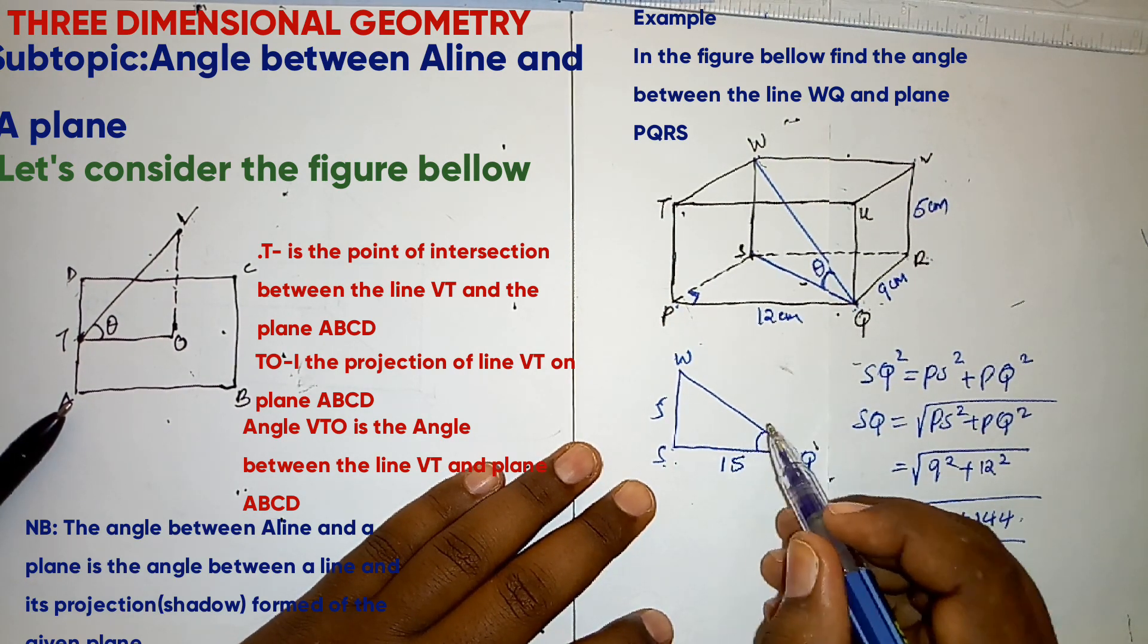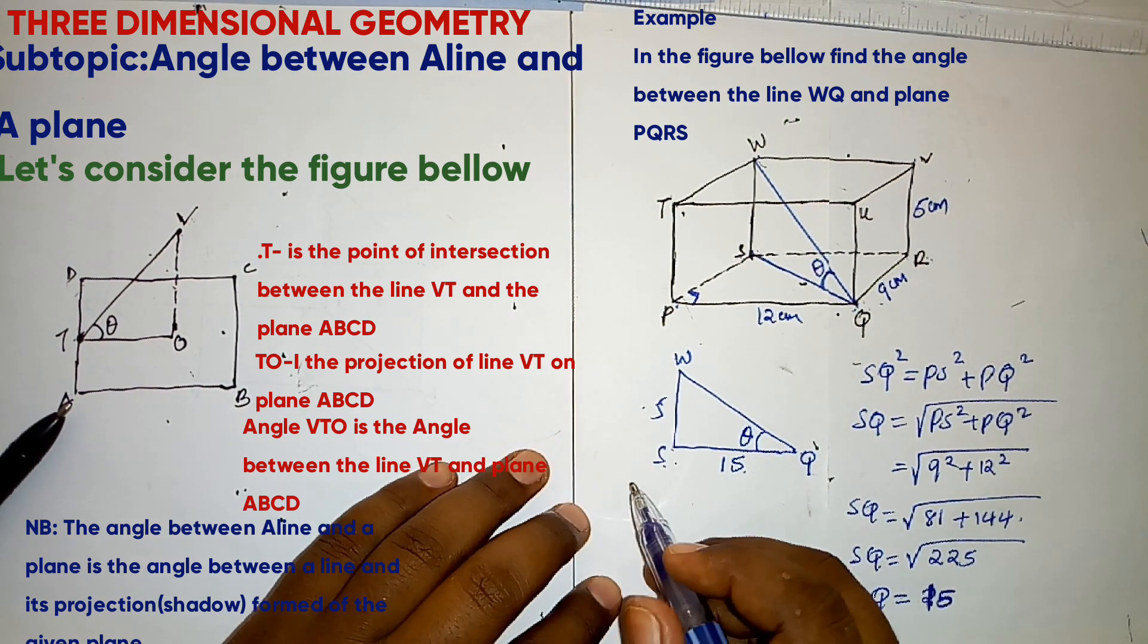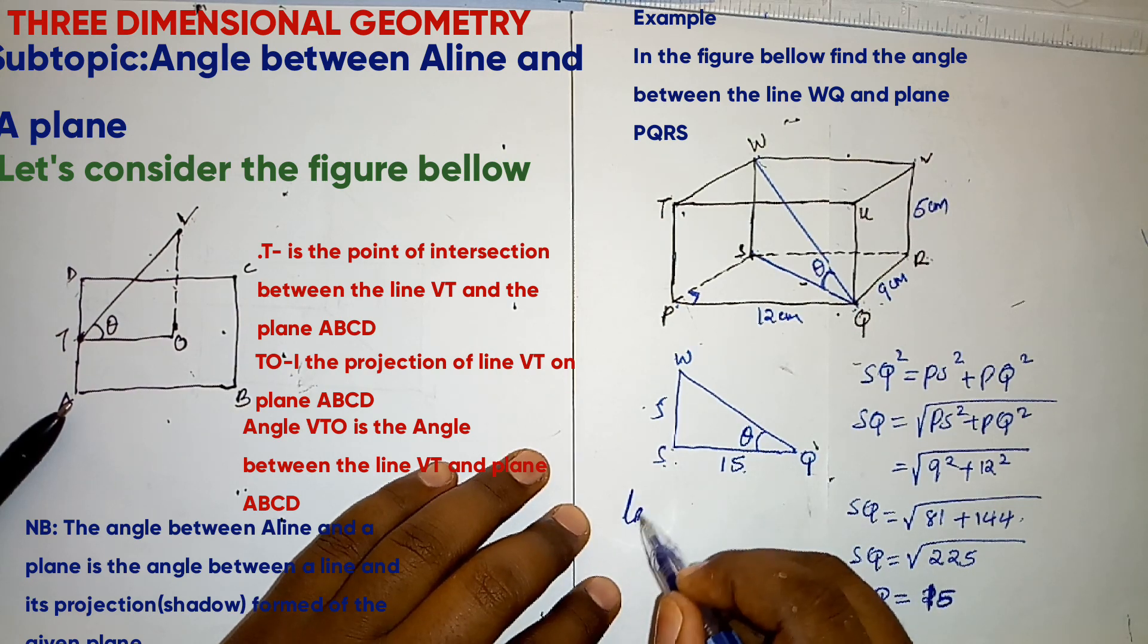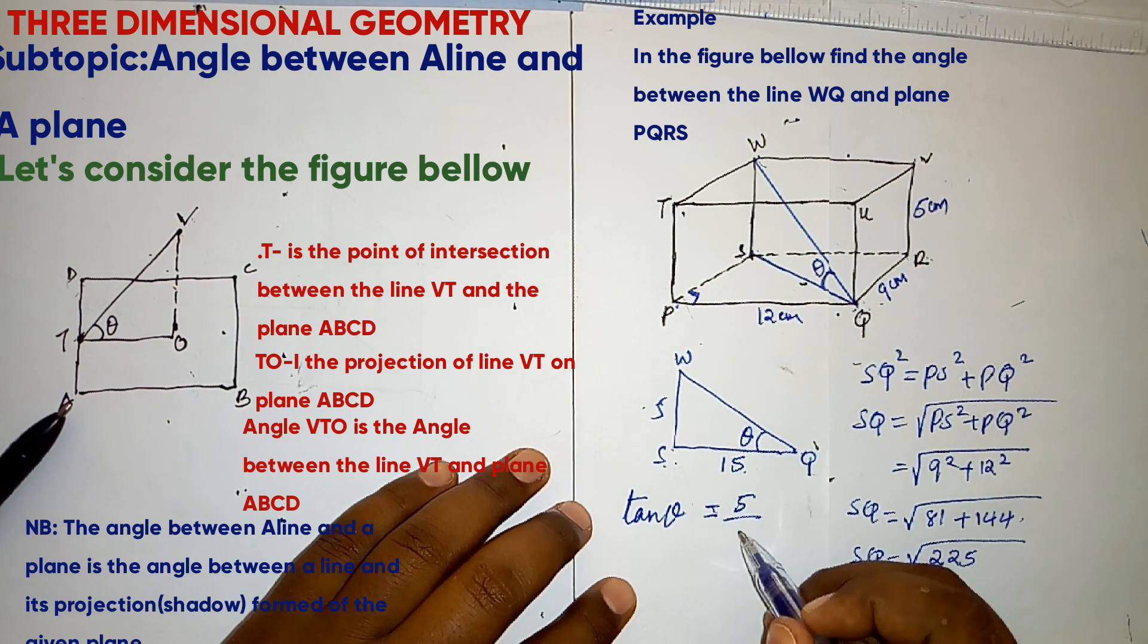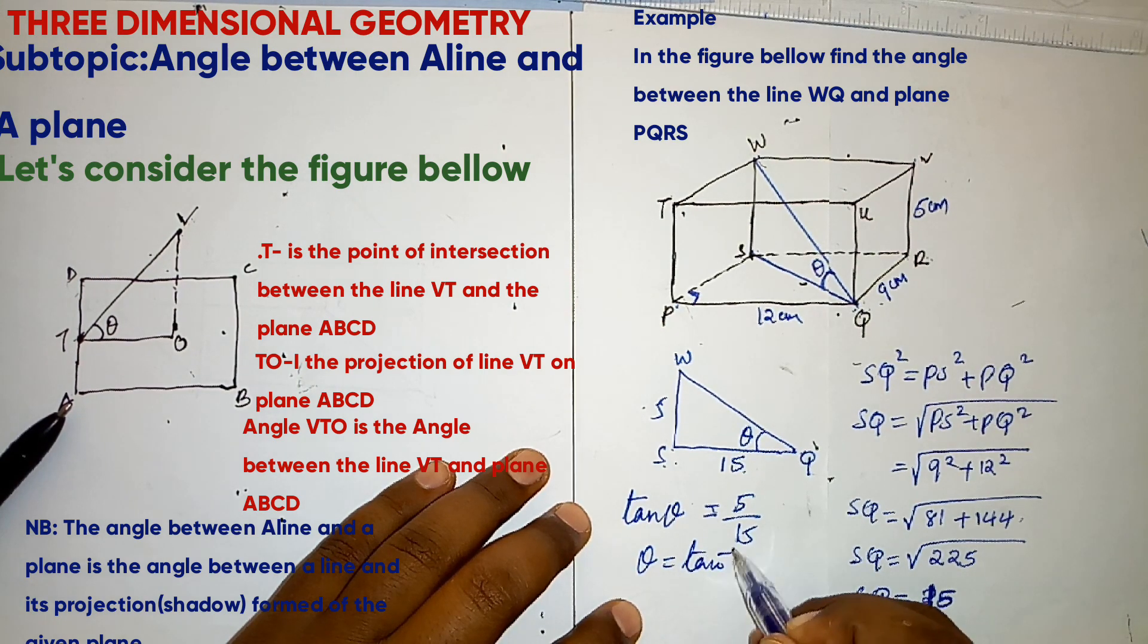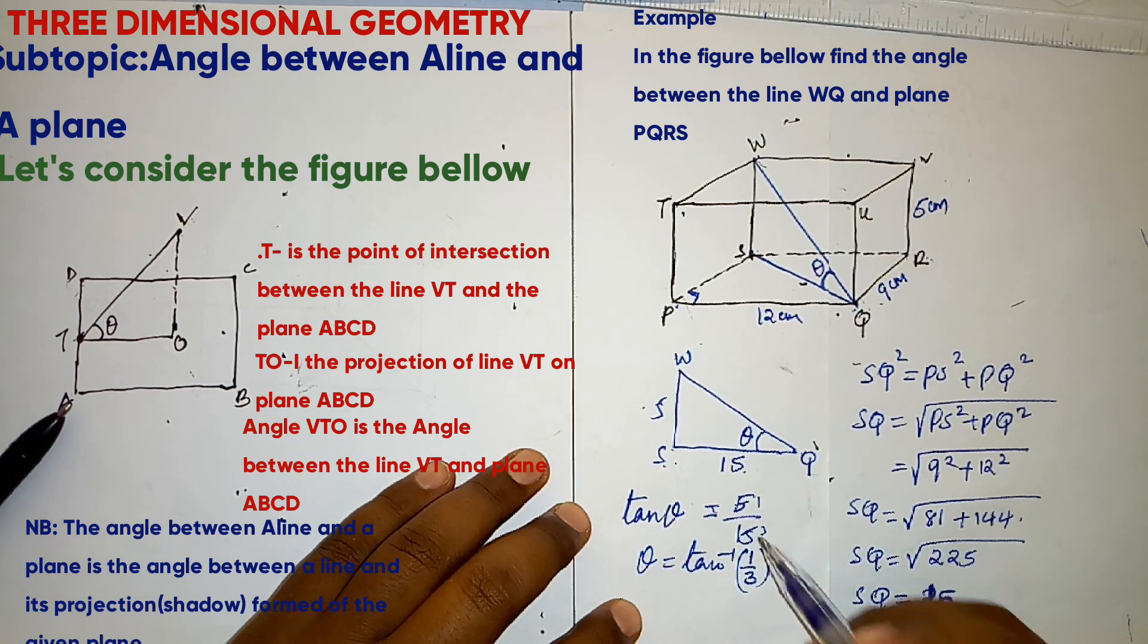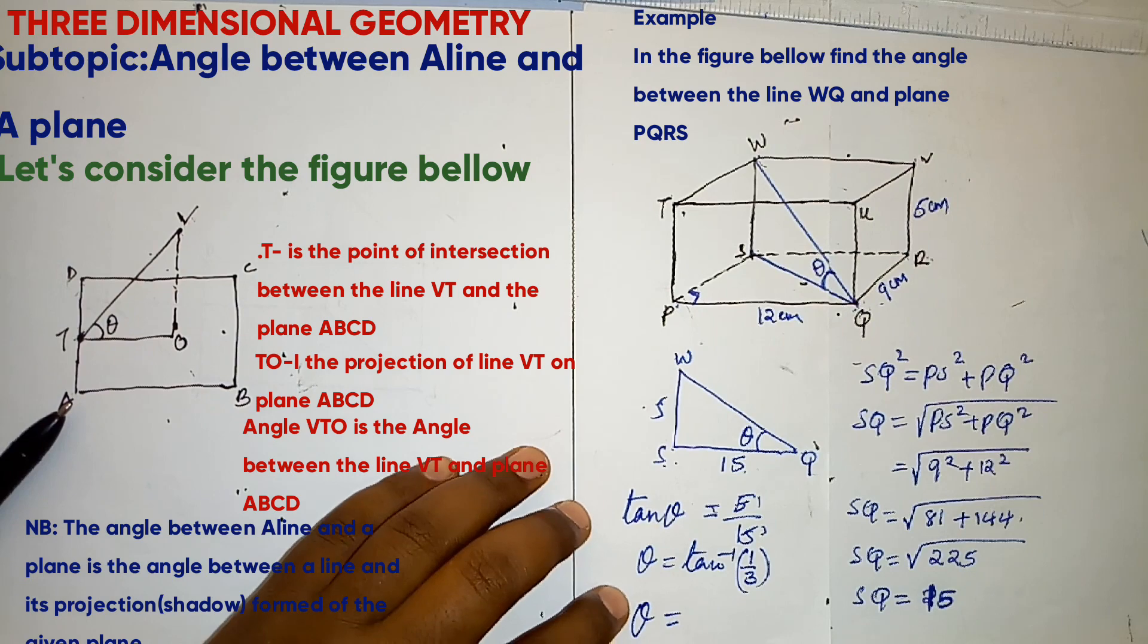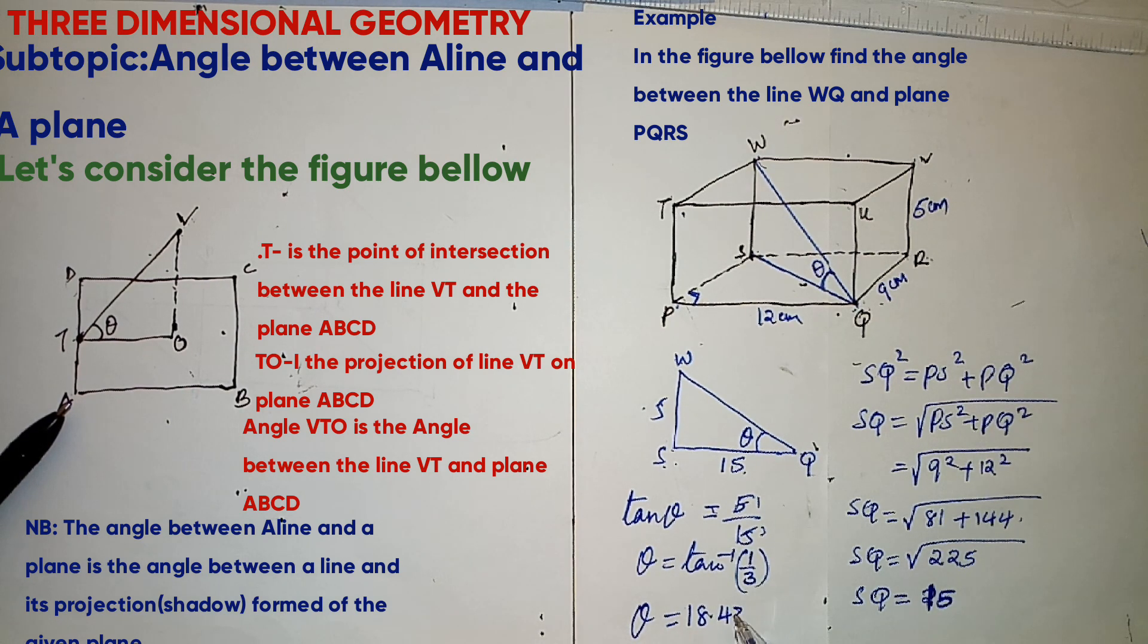So to get this angle now, that is angle Q, using tangent, the angle will be equal to 18.43 degrees to 4 significant figures.